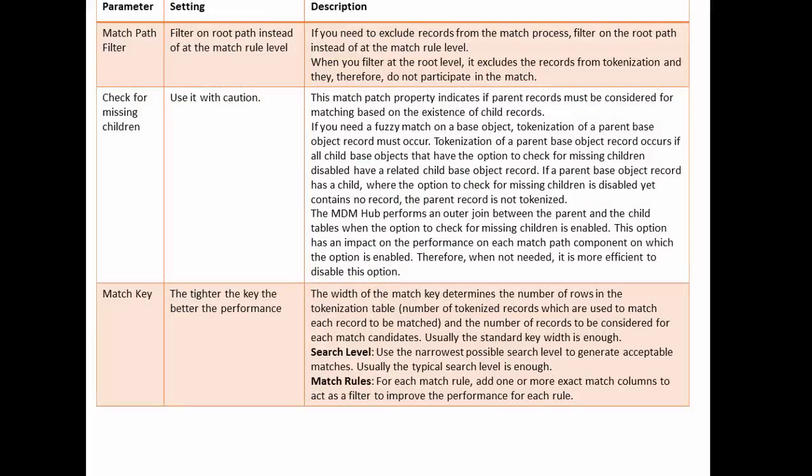The next property is match path filter. The recommendation is to filter on the root path rather than at the node level. If you configure the filter at the root level, it provides better performance than configuring it at the node level. When you filter at the root path, the number of records going to the match process is filtered early, so there is no impact on the match rules. Filtering at root level also excludes records from tokenization, so they do not participate in the match, giving better performance when executing the match rules.